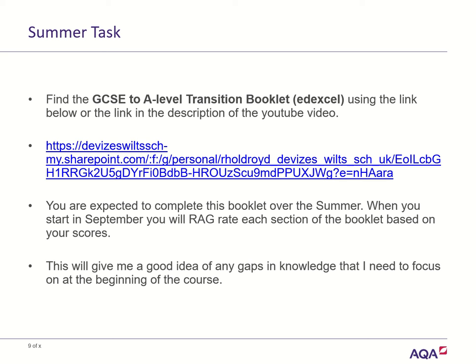So you'll mark your work every time you complete a section. And then you can rag rate it based on your percentage. So I would say obviously 50% you're around orange. If you got really low percentage on something around the 10s, 20s, 30s, you may want to go red. And then if you're up in the 70s, 80s, 90s, then you might want to go green. And then the idea of it, it gives me a good idea of any gaps in knowledge that I can focus on at the beginning of the course.